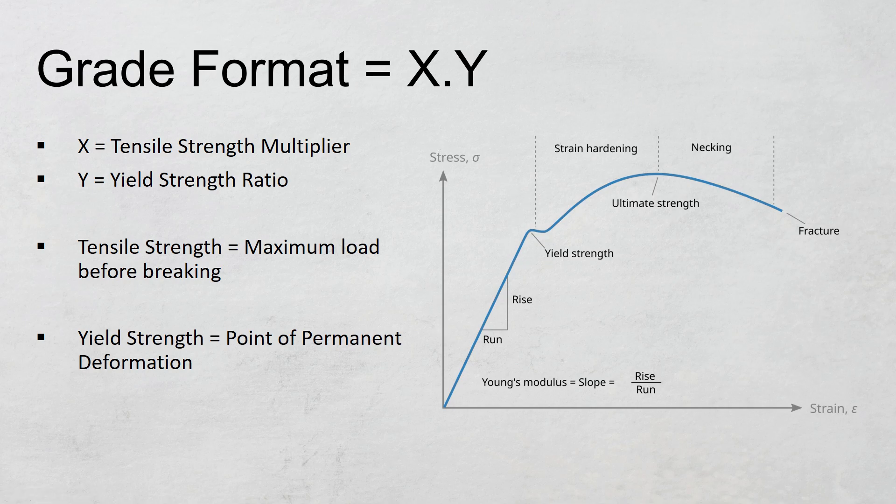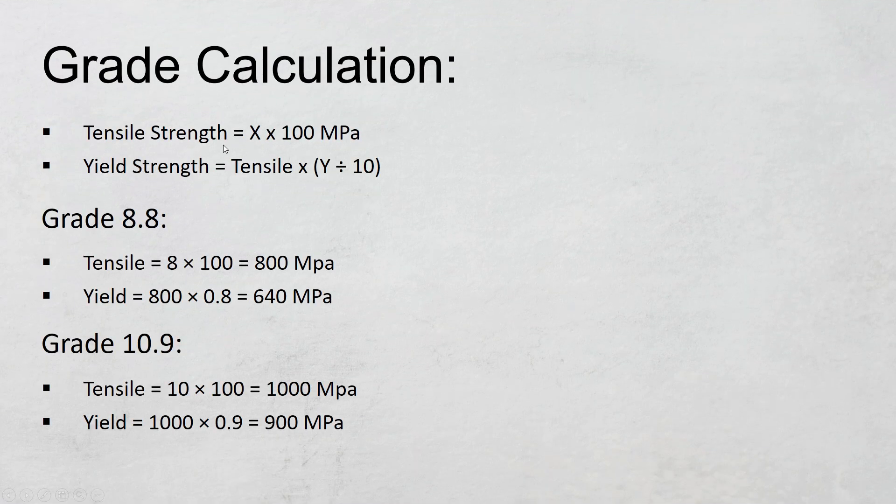Let's calculate this. Tensile strength is X × 100 MPa, where X is the first number. Yield strength: first divide the second number Y by 10, and then multiply it by tensile.